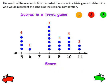Here's our next one. The coach of the academic bowl recorded the scores in a trivia game to determine who would represent the school at the regional competition. These are the scores of the trivia game. You can see that some students scored a 5, this one scored an 8, and a total of 7 students scored 8.